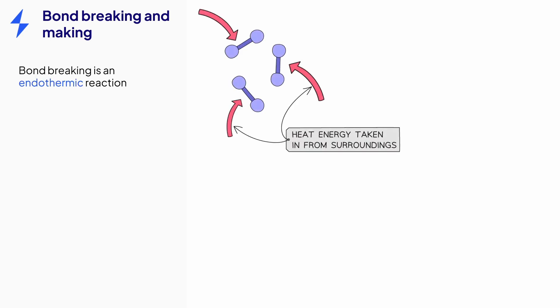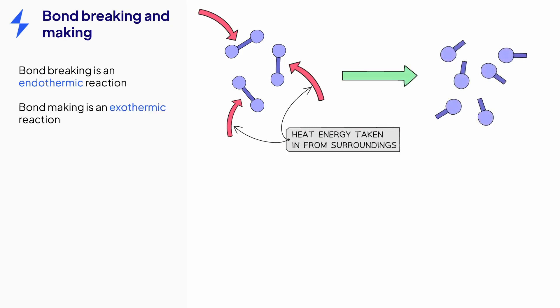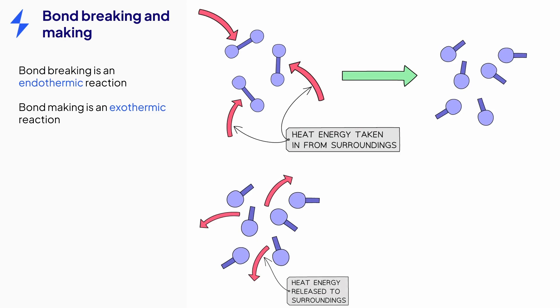During a chemical reaction, bonds between atoms in the reactants are broken and new bonds between atoms in the products are formed. Energy needs to be taken in to break bonds, so bond breaking is an endothermic process. Energy is released when new bonds are formed, so bond making is an exothermic process.